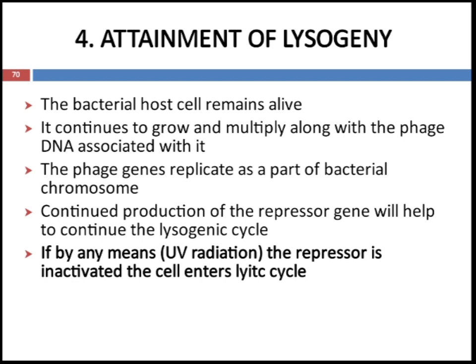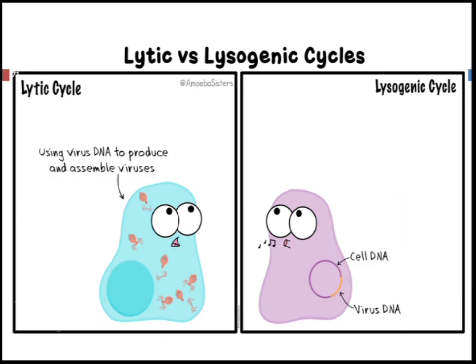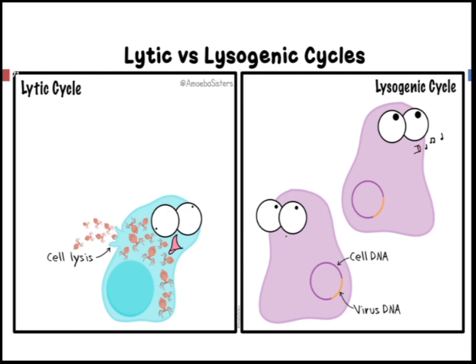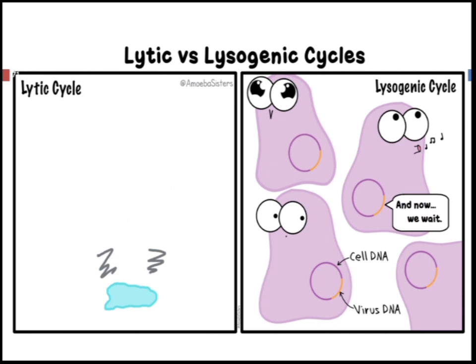The fourth stage is attainment of lysogeny. The bacterial host cell remains alive and continues to grow and multiply along with the phage DNA associated with it. The phage gene replicates as part of the bacterial chromosome. Continued production of the repressor gene helps to continue the lysogenic cycle. If the repressor gene is inactivated, for example by UV radiation, the cell will enter the lytic cycle.